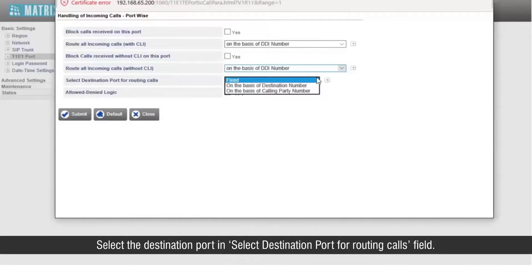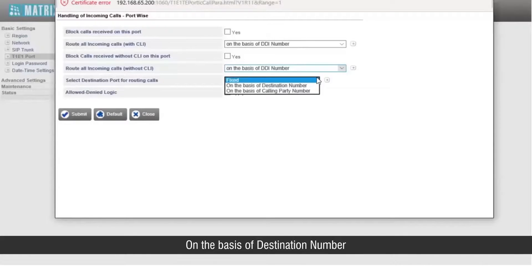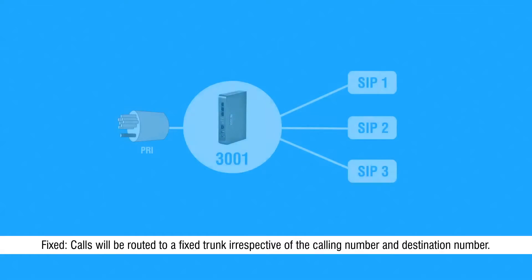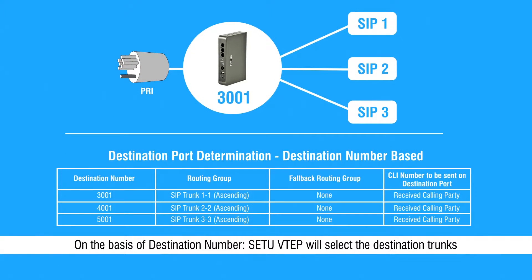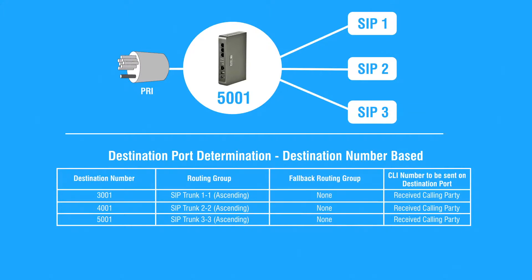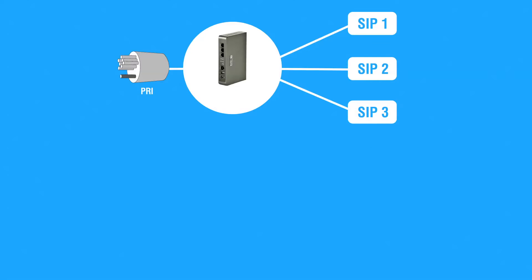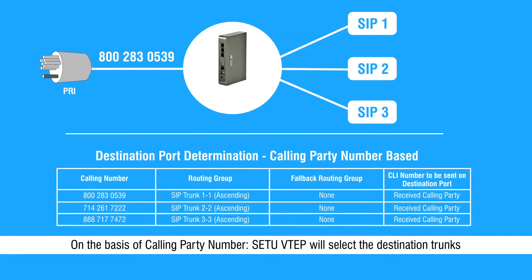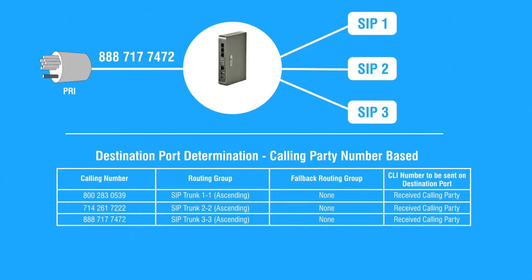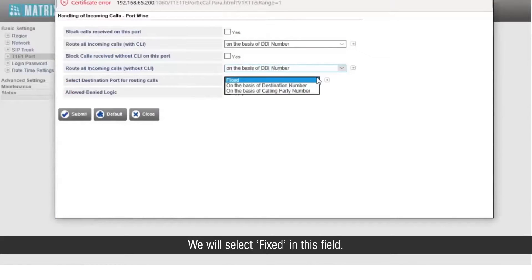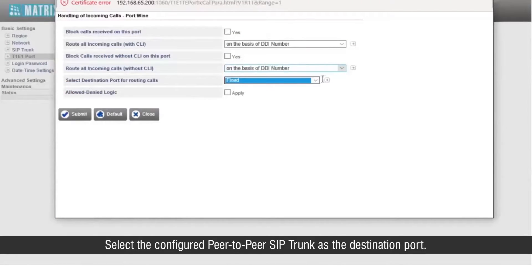Select the destination port in the 'Select destination port for routing calls' field. The following options are available: Fixed, on the basis of destination number, or on the basis of calling party number. 'Fixed' — the call will be routed to a fixed trunk irrespective of calling number and destination number. 'On the basis of destination number' — Setu VTAP will select the destination trunk based on the number dialed by the caller. 'On the basis of calling party number' — Setu VTAP will select the destination trunk depending upon the calling party, i.e., caller-to-destination trunk mapping. We will select Fixed in this field. Select the configured peer-to-peer SIP trunk as the destination port.